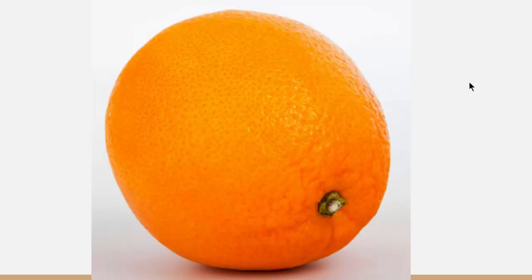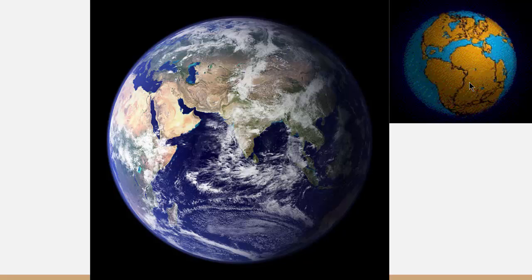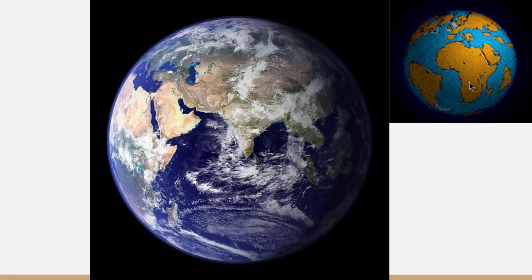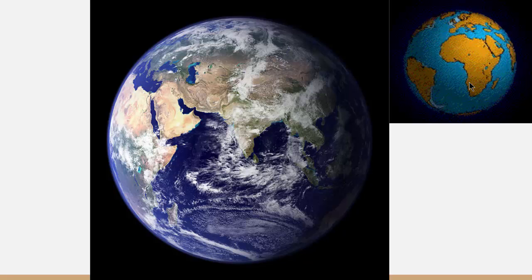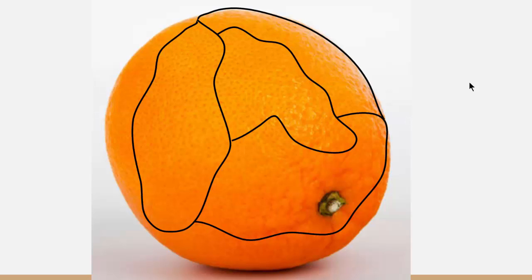Just like an orange, the Earth is composed of an outside skin called the crust. But this crust is not a complete unbroken layer — it is broken down into several smaller pieces. These pieces are called plates, the plates that compose the Earth. So just like dividing the outer skin of an orange into several parts, the crust of the Earth is divided into several plates.